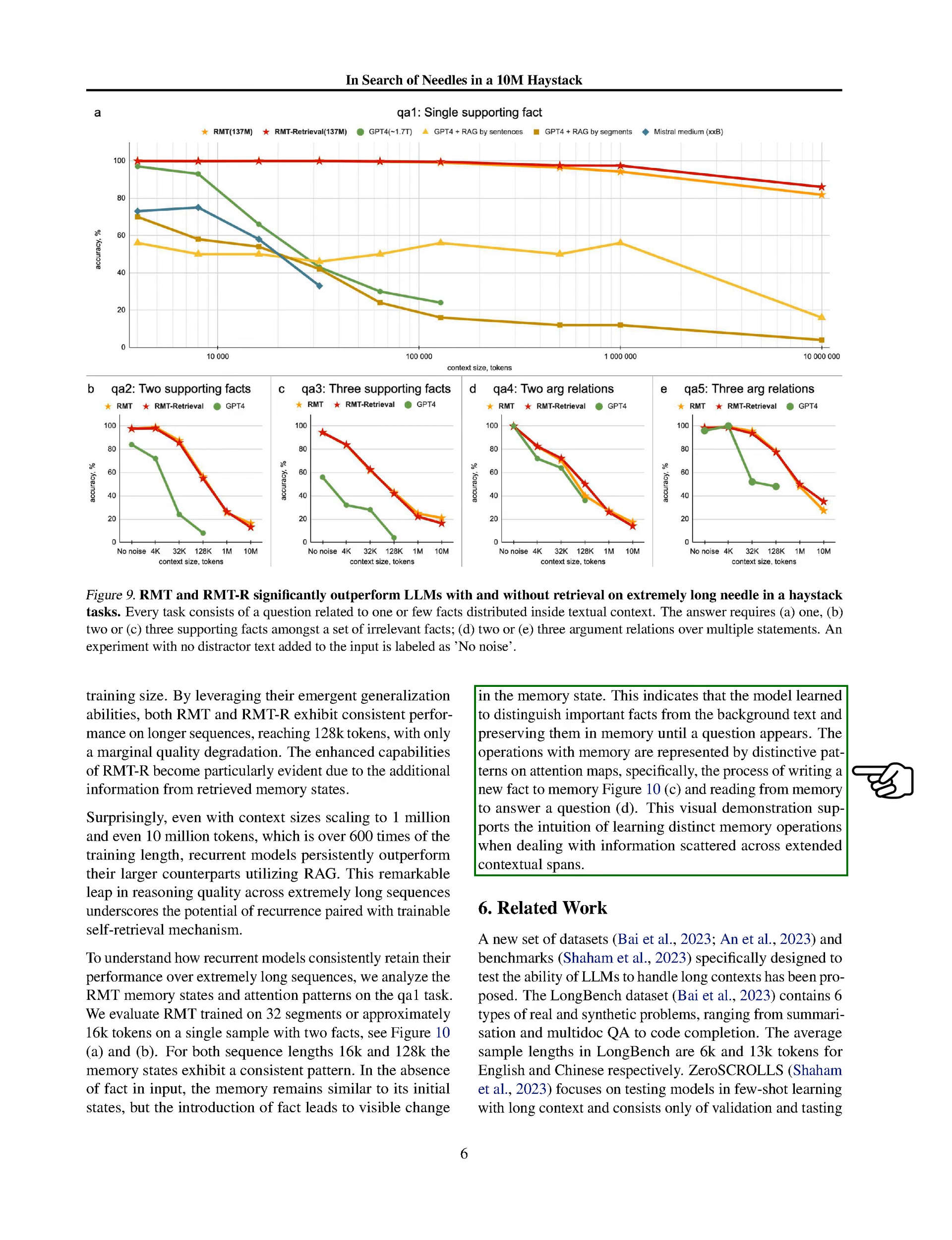In this section, we discuss various datasets and benchmarks that have been developed to evaluate the performance of large language models (LLMs) in processing long contexts. We introduce the LongBench dataset, which comprises six types of real and synthetic problems, including summarization, multi-document question answering (QA), and code completion. The average lengths of samples in LongBench are 6,000 tokens for English and 13,000 tokens for Chinese.